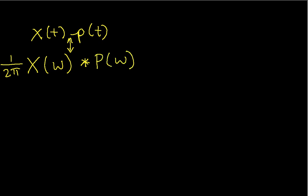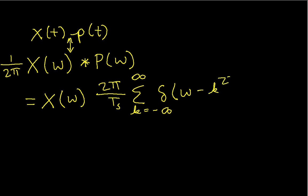Now we just went through a lot of pain and effort to figure out P of omega. So P of omega is 2 pi over t sub s, the summation going from minus infinity to infinity of delta omega minus k 2 pi over t sub s. And to save writing time, from now on I will call this omega sub s. And this should be convolved.